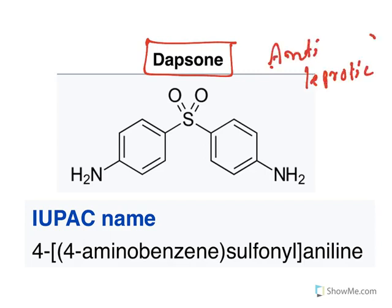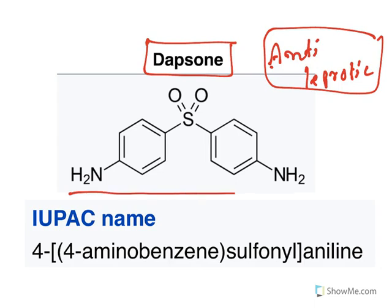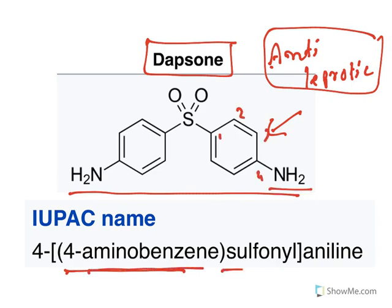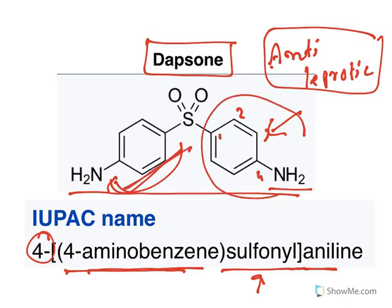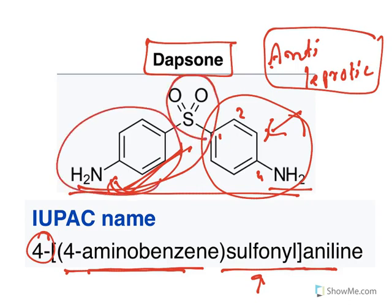The last drug is dapsone, an anti-leprotic drug widely used to treat leprosy. Its mechanism of action is similar to sulfonamides — it interferes with the biosynthesis of folic acid. The IUPAC name is 4-aminobenzene sulfonyl aniline: at the fourth position an amine group is present on benzene, linked via a sulfonyl group to aniline at the fourth position.